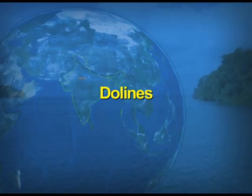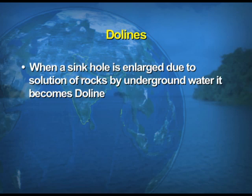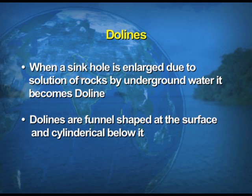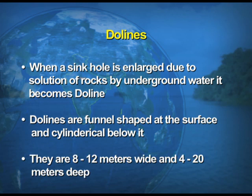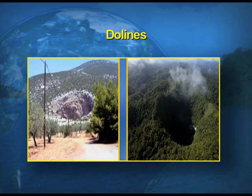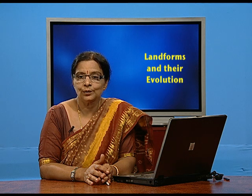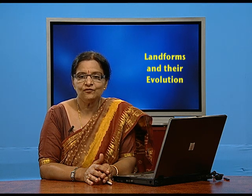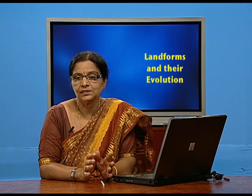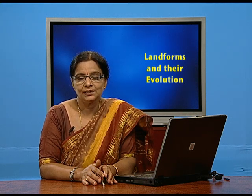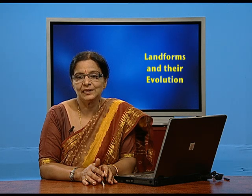Now we take up another feature known as dolines. When a sink hole is enlarged due to the solution of rocks by underground water, it becomes a doline. Dolines are funnel-shaped at the surface and cylindrical below, 8 to 12 meters wide and 4 to 20 meters deep. You must notice that all features discussed so far — sink holes, swallow holes, dolines — look almost the same: round, deep depressions formed by underground water, taking different shapes and given different names.